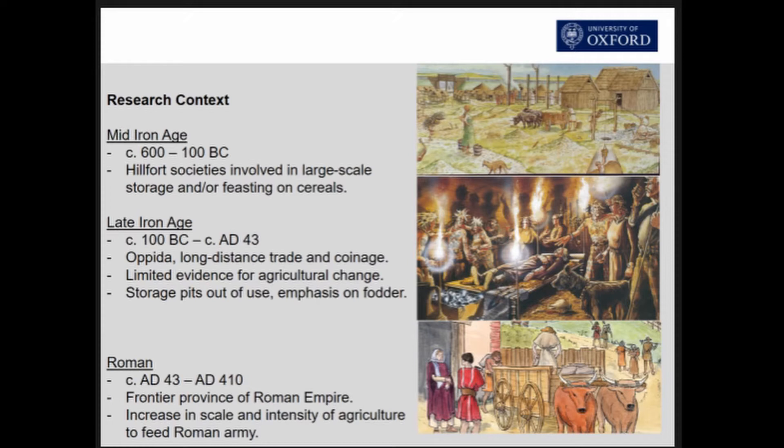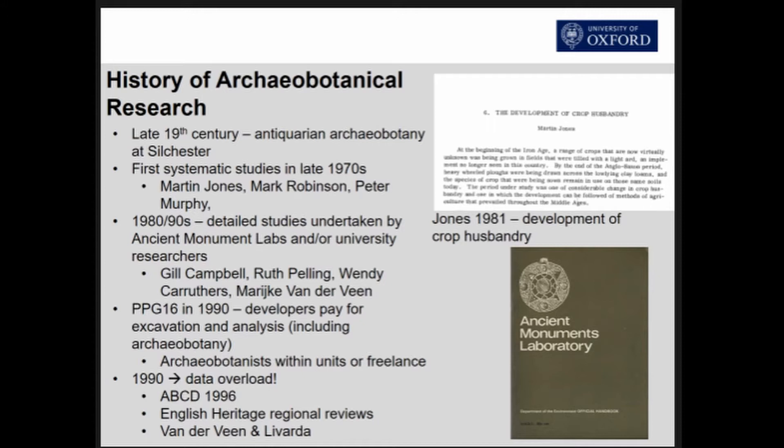The Roman period starts properly in AD 43, whereby Britain stays as a frontier province at the edge of the empire until AD 410, when the early medieval period begins. The main questions in terms of the Roman period are how we can investigate the scale and intensity of agriculture in relation to food supply to feed the Roman army and the new urban centres.